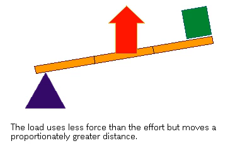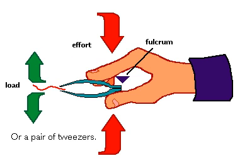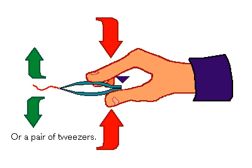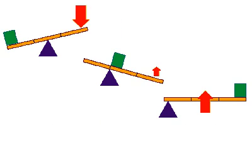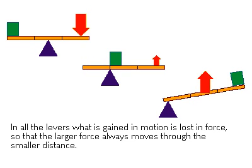The load experiences less force than the effort, but moves a proportionately greater distance, as with a fishing rod pulling a fish, or a pair of tweezers grasping an object. For all these levers, what is gained in motion is lost in force. The larger force always moves through the smaller distance.